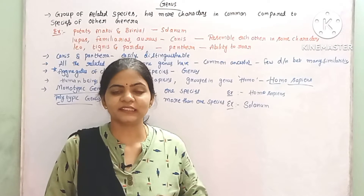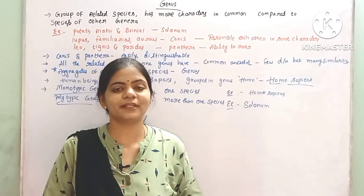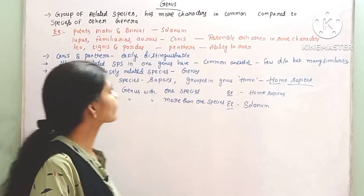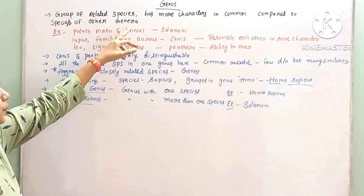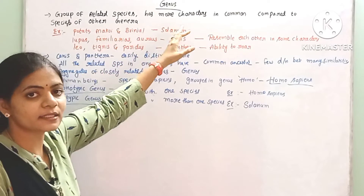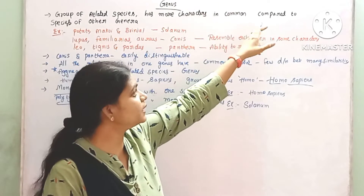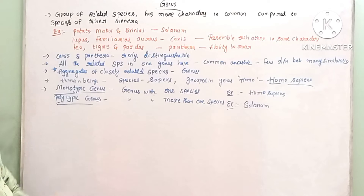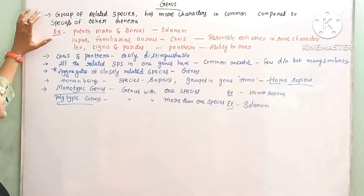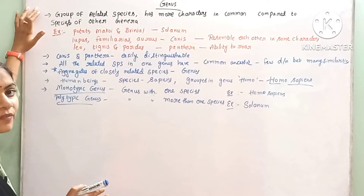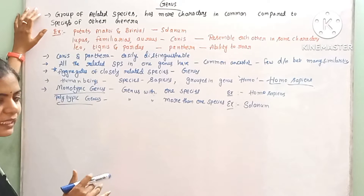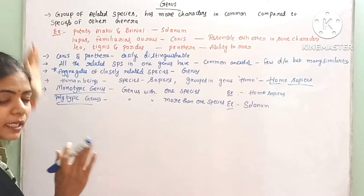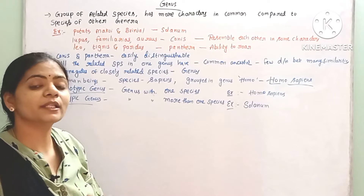So species — the next upper category is genus. Genus means a group of related species that has more characters in common compared to the species of other genera. Species are closely related, but these characters are common in general compared to other species.